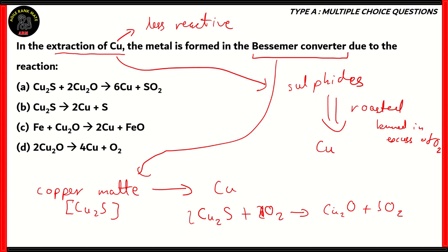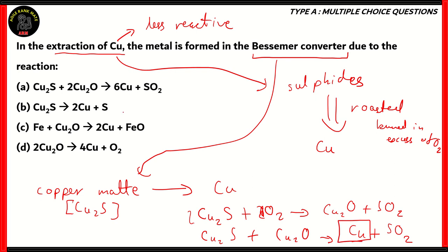While this process is happening, another process involving Cu2S and Cu2O happens as well. Cu2S + Cu2O gives us copper and SO2. Since we have excess oxygen, both reactions happen at the same time, and we finally get copper from the Bessemer converter. Among the options, it is clear that option A is the correct answer because this reaction in option A is the balanced version of the reaction we wrote down.